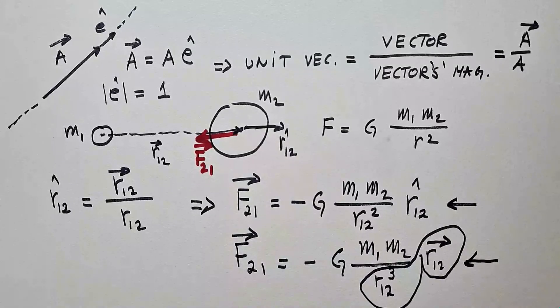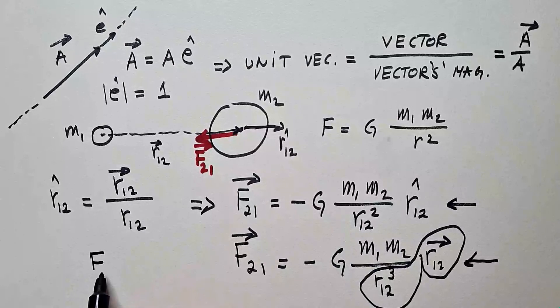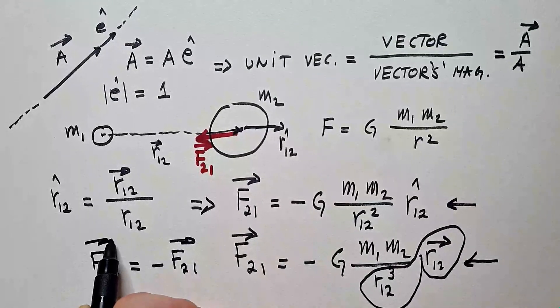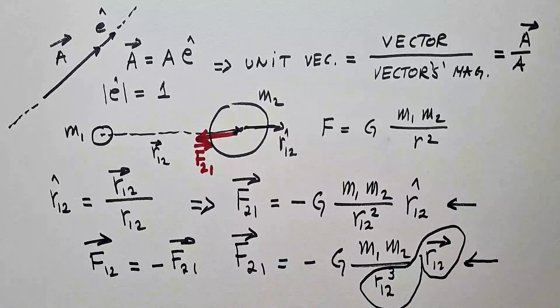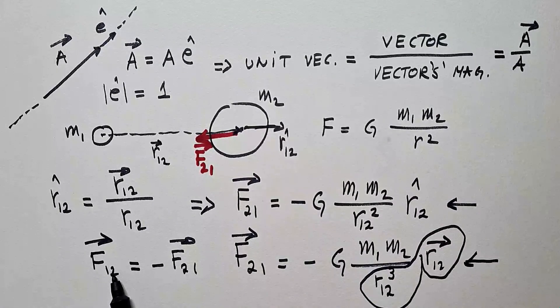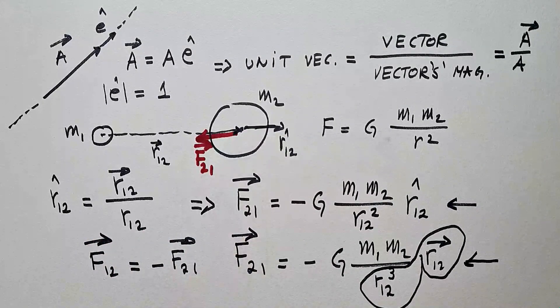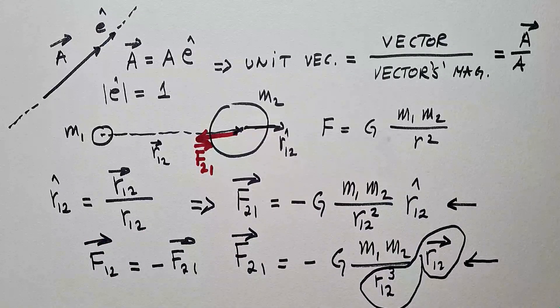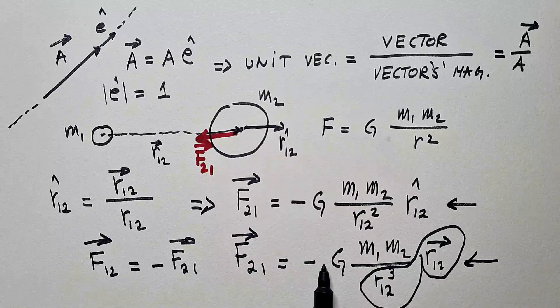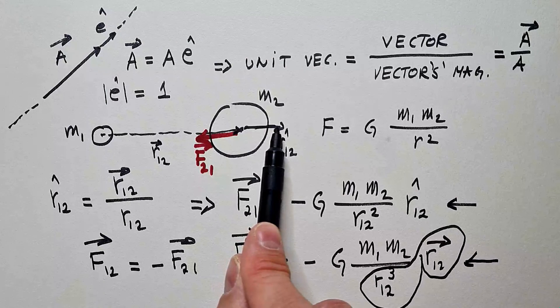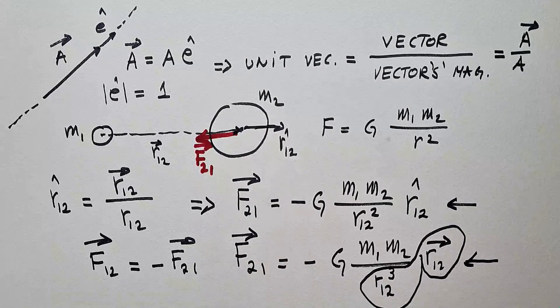Third Newton's law tells us that F₁₂ is minus F₂₁, and everything fits correctly, because F₁₂ would be force on 1 by 2, and that would be minus this, and minus and minus gives plus, and that is correct, because it would be in the same direction as R₁₂.